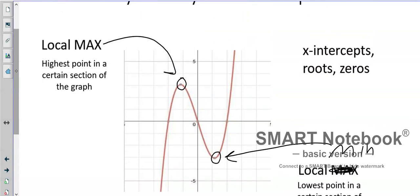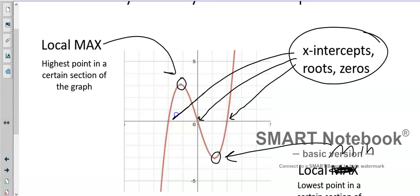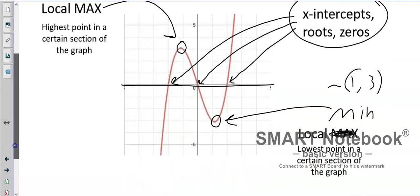Okay? So the local minimum is right here. So we also have x-intercepts, roots, and zeros, which we've talked about before. Right there, right there, and right there. Where they cross the x-axis. So it looks like negative two, zero, and positive two. This one, again, is approximately negative one, three. And this min is approximately one, comma three. That little squiggly mark means approximately.